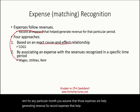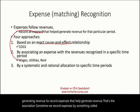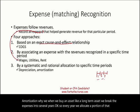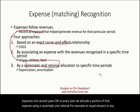The third approach is systematic and rational allocation, an example of which is depreciation and amortization. When we buy a long-term asset, we break the expense into several years, allocating a portion each year in an equal amount or other amount, as long as it is systematic and rational.